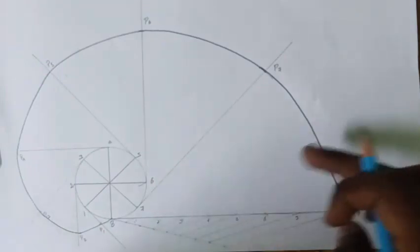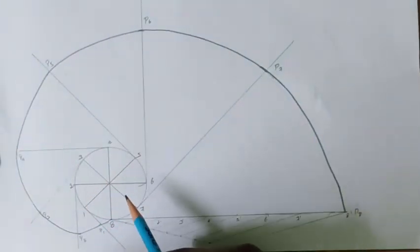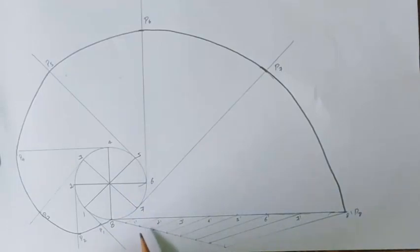If you want to have more closer points we can divide this circle into 12 equal parts. Similarly we have to divide this line also into 12 equal parts. So now we have drawn a simple involute of a circle and then we need to draw the tangent and normal as given in the question.